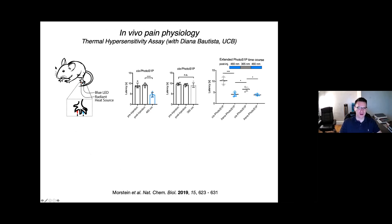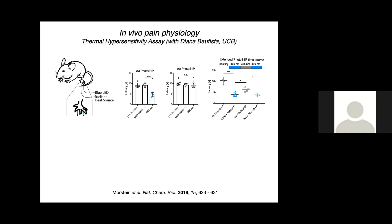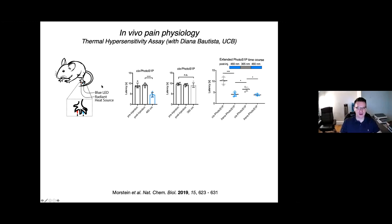We then looked at behaving animals to see if we could control this effect in the peripheral nervous system and observe a behavioral readout. This was done using paw withdrawal latency assays. Before and after injection of the inactive cis form of the lipid, there is basically no effect on paw withdrawal latency. But when we use an LED to irradiate the paw for two minutes, we see a rapid increase in thermal hypersensitivity that is indistinguishable from injecting amounts of the endogenous lipid. We have complete control from baseline to full activation of this behavioral readout using only light.